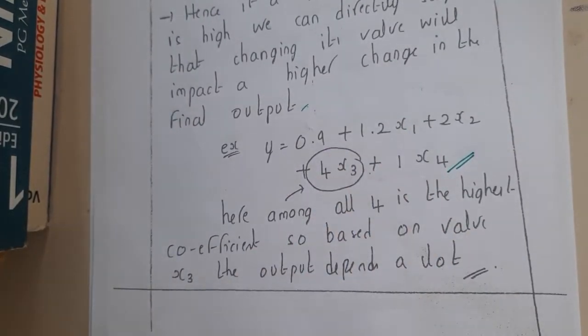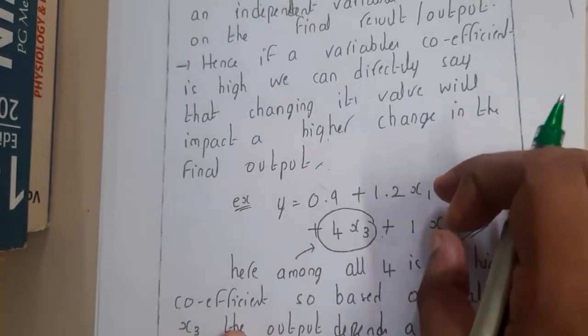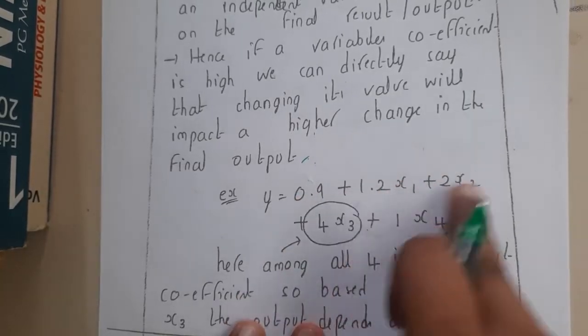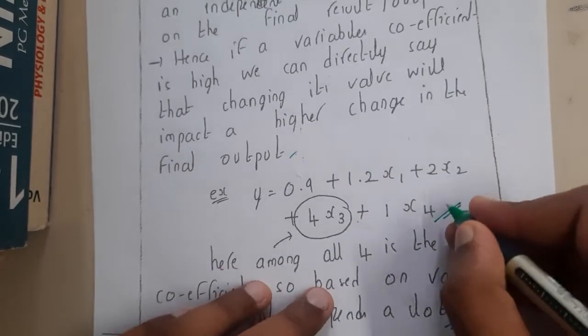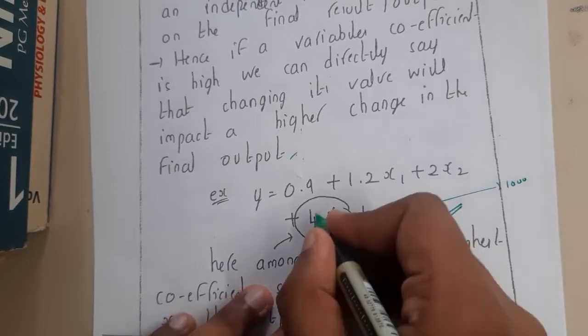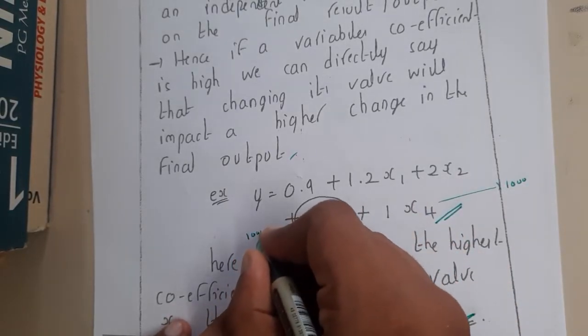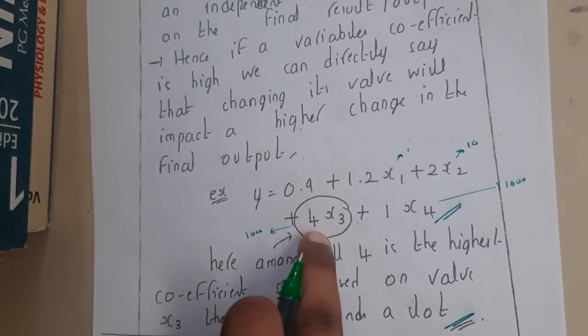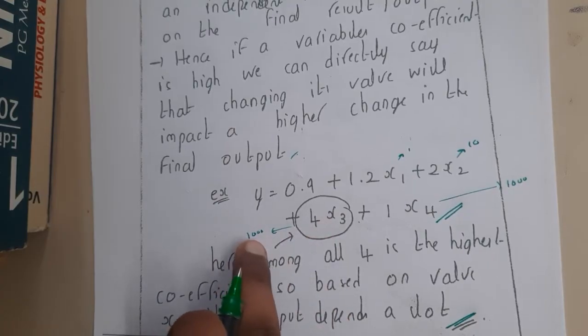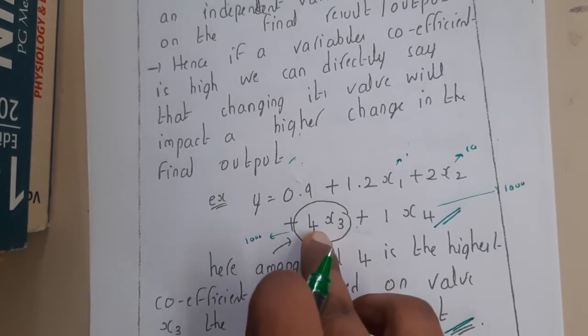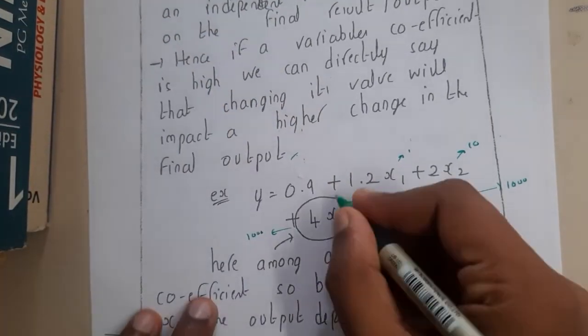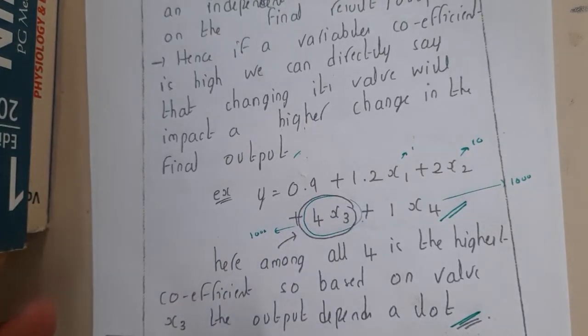Among all coefficients, 4 is the highest at x3. Let's take an example. Assume you're collecting values, and this is some rupees calculation. Assume x4 indicates thousands, this indicates hundreds, this indicates tens, and this indicates ones. Here x3's coefficient is 4. If I change this thousand or hundred to ten thousand, the y value will also increase a lot. This concept of increasing significantly means this value should be taken carefully.